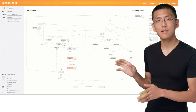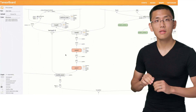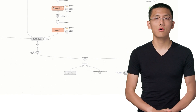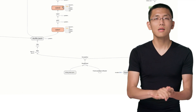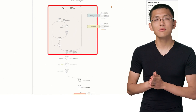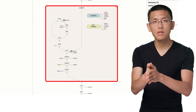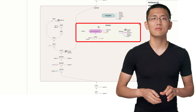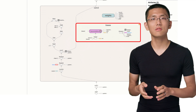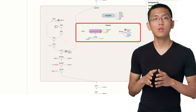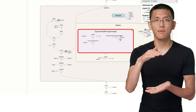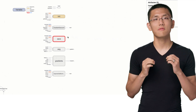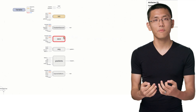Here's an example of a more complex version of a model graph being visualized by TensorFlow. Notice how TensorFlow allows us to zoom, pan, and expand elements to see more details. This means that we can look at the model at different layers of abstraction, which can help reduce the visual complexity.